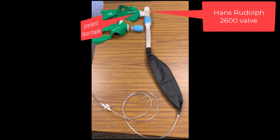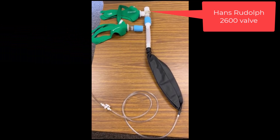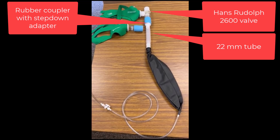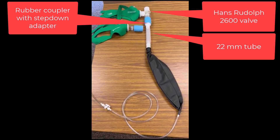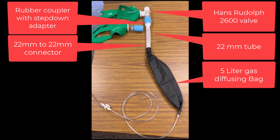If you have an MGC Diagnostics Ultima system, you can also use the Prevent mask with the Prevent flow sensor to measure VO2, VCO2, FiO2, and minute ventilation. The Hans-Rudolf valve is connected to a rubber coupler and a step-down adapter, which is connected to a 6-inch 22-millimeter tube. Two of the 22-millimeter tubes come with each kit. Using a 22-millimeter to 22-millimeter connector, a 5-liter gas diffusing bag is connected to the setup.